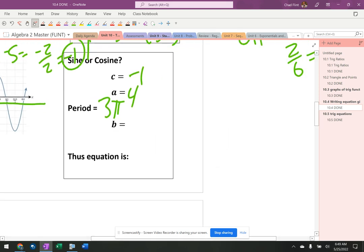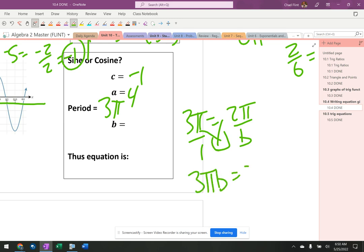But that means three pi equals two pi over b. Cross multiply, I get three pi b equals two pi. Divide by three pi and I get two thirds. So my b is two thirds.